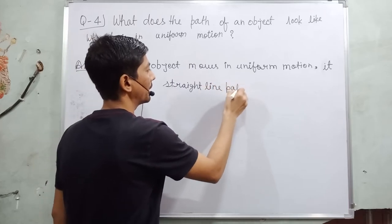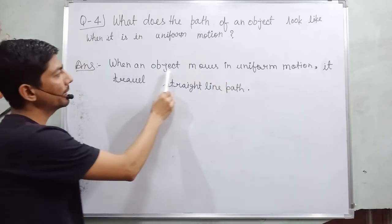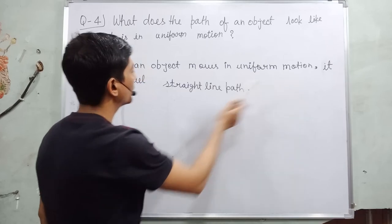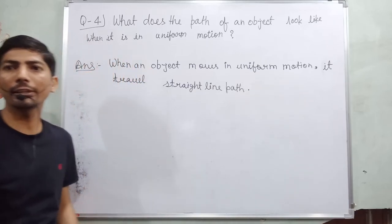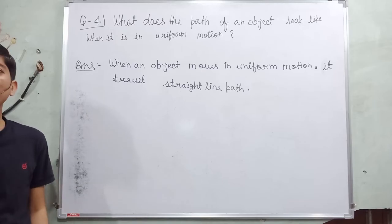Straight line path. Answer will be: When an object moves in uniform motion, it travels straight line path. Okay, so this will be your answer. You pause the video and note it down or take a screenshot.